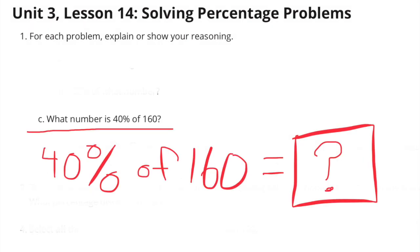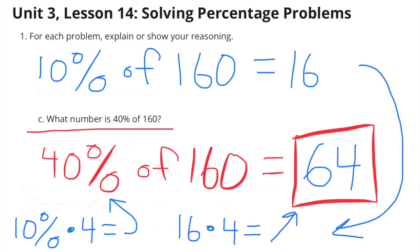Part c: What number is 40% of 160? 10% is 4 times smaller than 40%, and I know that 10% of 160 is 16. I need to multiply the 10% times 4 to make it 40%, and multiply the 16 times 4 to get 64. So 40% of 160 is 64.